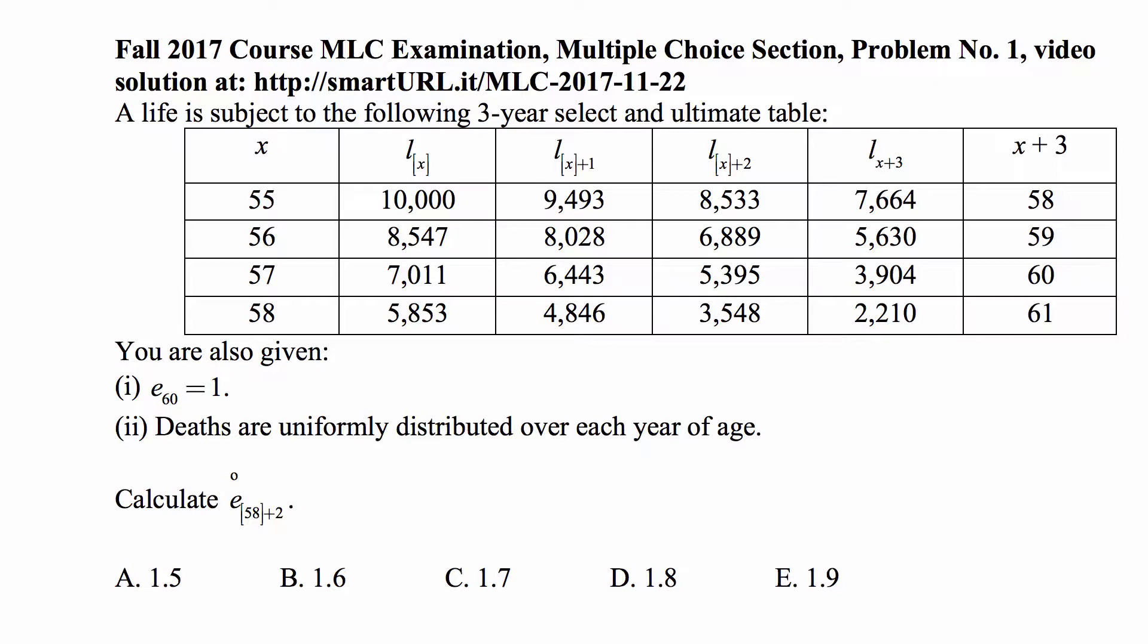A life is subject to the following three-year select and ultimate table, and then you have the select population size then declining year by year. After three years it becomes the regular population. That's why you have the x+3 column for the x+3 age. This is the data we're going to use in the problem.